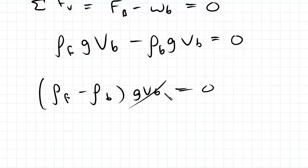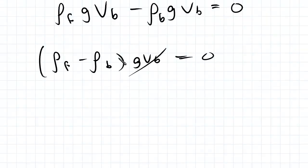If we take g*V_B onto the other side, we can see that equilibrium is dependent on the difference between the density of the fluid and the body. So rho_F minus rho_B equals zero, that's the difference between the two densities.